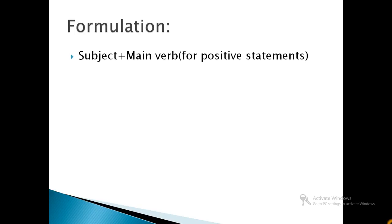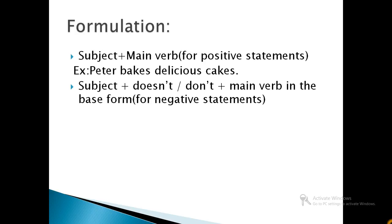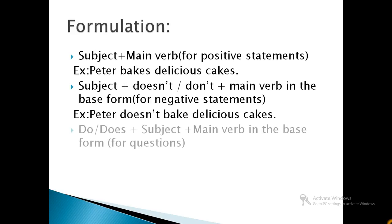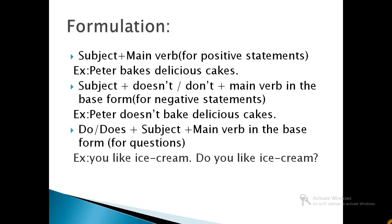Formulation of simple present tense. To make a positive statement, we use subject plus main verb. For example, Peter bakes delicious cakes. For the formulation of negative statements, we use subject plus doesn't or don't plus main verb in the base form. For example, Peter doesn't bake delicious cakes. For questions, we use do or does plus subject plus main verb in the base form. For example, do you like ice cream?